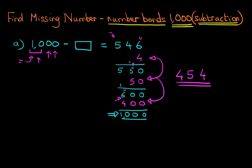That is the answer. 1000 minus 454 equals 546. The missing number was 454.